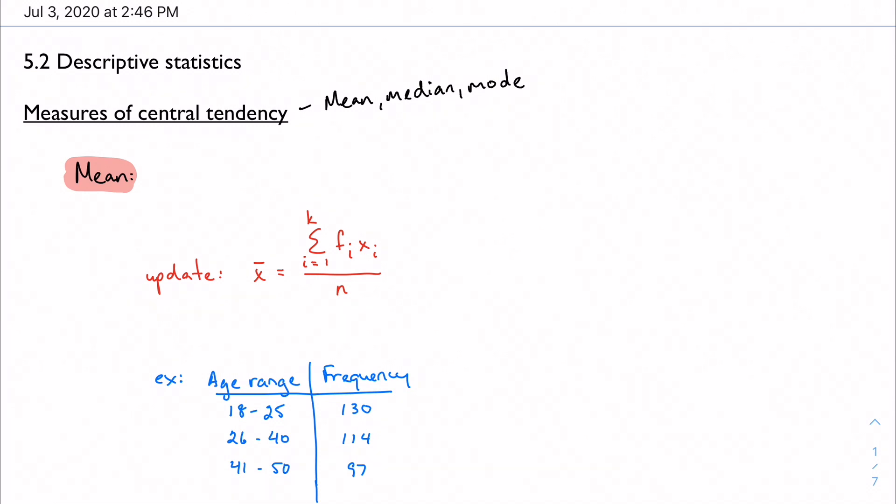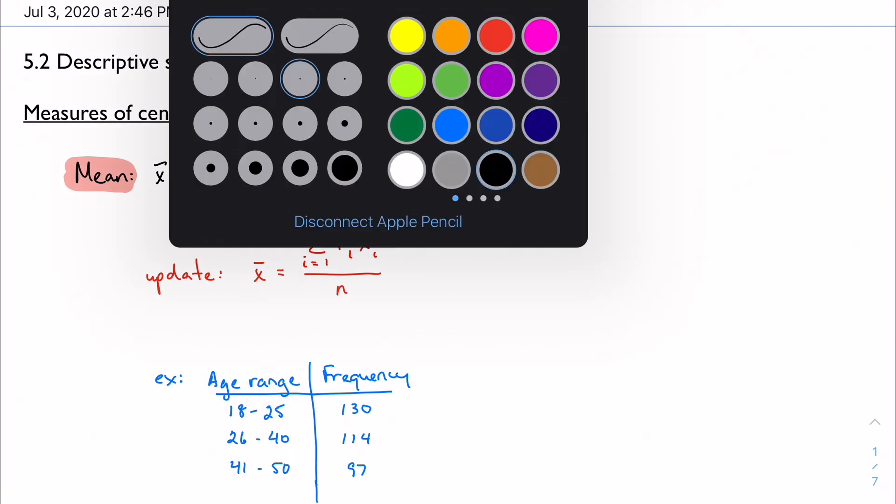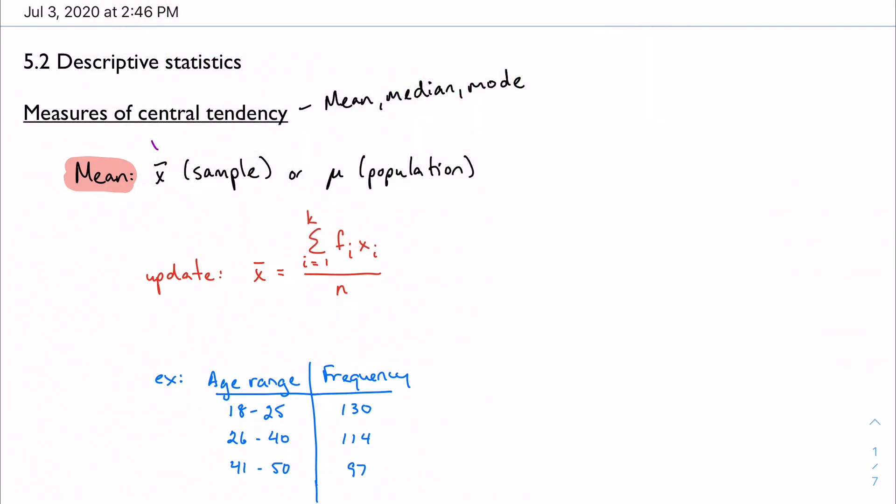So mean, hopefully we all remember, but we have two ways of notating this. We can either use this x-bar, and that's going to be used if we're talking about the mean of a sample. Or it's going to be the Greek letter mu, and we're going to use that if we're talking about a population. So just to kind of clarify again, this is what we call x-bar. And this is the Greek letter mu.